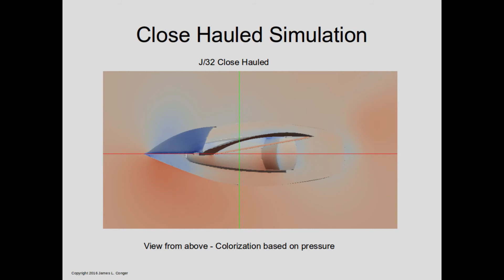This is a three-dimensional picture of the J32 viewed from above, on a port tack with 30-degree apparent wind — imagine the apparent wind coming from the lower left corner of the image. The colorization is based on pressure: blue surfaces are low pressure and reddish areas are high pressure. The jib is low pressure on the downwind side, which is the part of the force that drives the boat forward and also heels the boat.